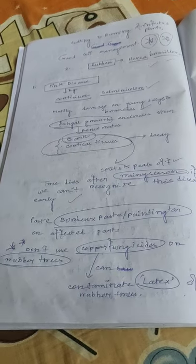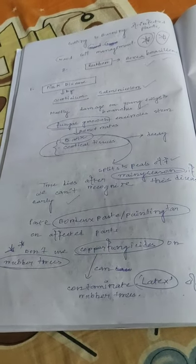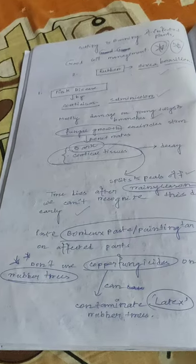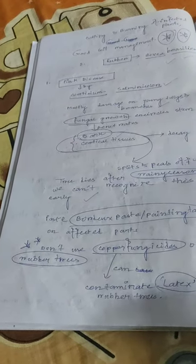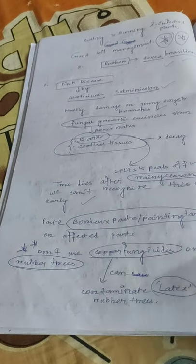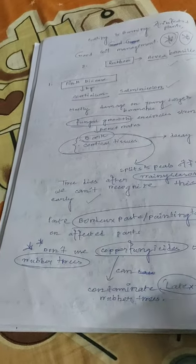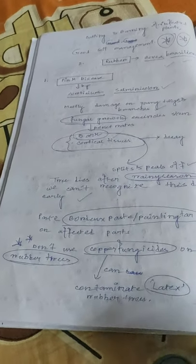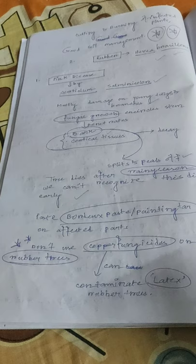Corticium salmonicolor is the causal organism of pink disease of rubber. It mostly damages young twigs and branches. Fungal growth encircles the stem and penetrates the bark and cortical tissues. Bark decay follows, with the bark splitting and peeling off, and the tree dies after the rainy season. If we cannot recognize this disease early, it must be controlled by paste application.